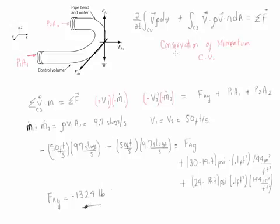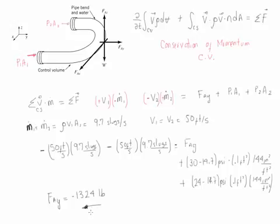To summarize: we started with conservation of momentum and neglected the first term because the flow is steady. The second term simplified to the summation of velocities times mass flow rates at each control surface for the particular axis of interest. In this case, velocities only exist in the y direction, so we simplified accordingly. We calculated the needed values — mass flow rates and velocities — and, because atmospheric pressure has the same effect at both points, we neglected it and used gauge pressure at each location to solve for the anchoring force. The negative result indicates it acts in the opposite direction to what was originally assumed.